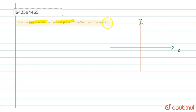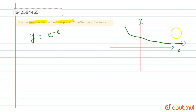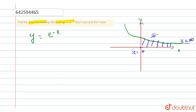In this question, we have to find the area bounded by the curve. We have the equation y is equal to e raised to power minus x. First of all, we draw the graph for e raised to power minus x. The area bounded by the curve is this area — we have to find this area. Here, x is equal to 0 and this graph continues to x is equal to infinity.